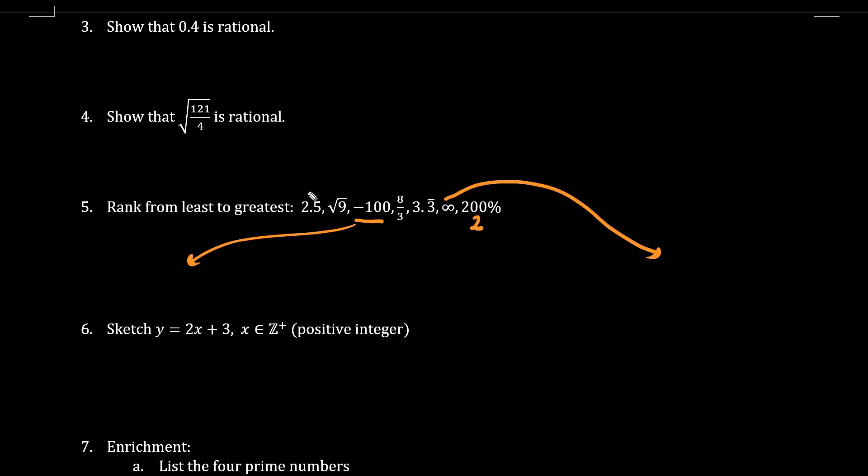Now what about 2.5? 2.5 is larger than 2. So what is the square root of 9? Here we have 3. And what's 8 divided by 3? The same thing as saying 2 and 2 thirds. This here is 2.6 repeater.